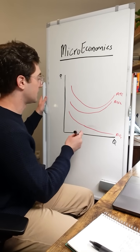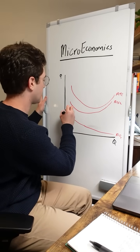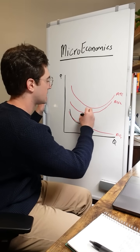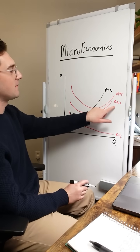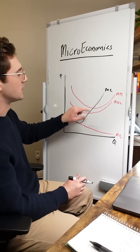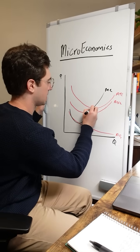And so does this MC curve. But the key thing you've got to remember when you're drawing these is that it must intersect the AVC and ATC at their minimum points, like right here and right here.